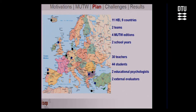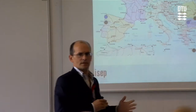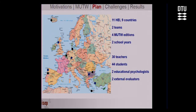In the first phase, it was possible to gather 11 institutions from 9 countries, and the students were assembled into teams. It ran for two years, giving us four editions of this experience. It involved 30 teachers from all the institutions and 44 students. It was also important to include educational psychologists to monitor the experience and external evaluators — professional people with a background in evaluation.